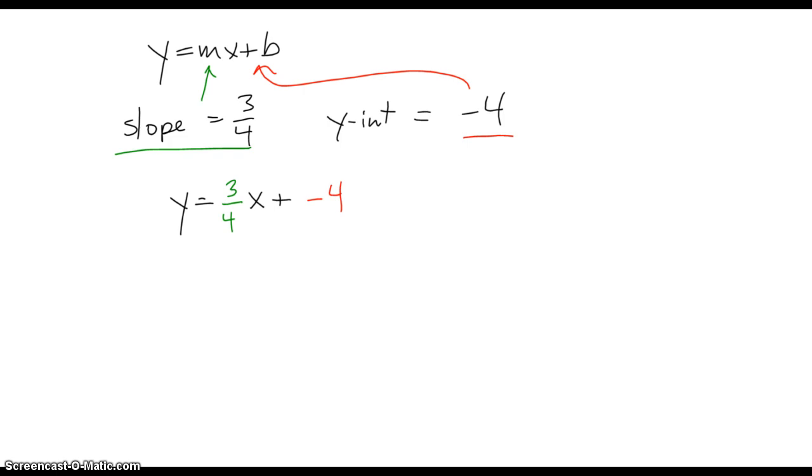One more thing to clean it up right. Plus a negative is what? That's minus. So we got y equals 3 fourths x minus 4. So this is the slope-intercept form of an equation for a line with slope 3 fourths and y-intercept of negative 4.